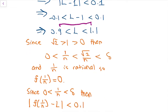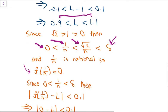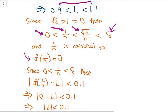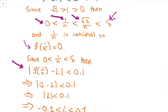Instead of considering √2/n, we now consider the number 1/n. Since 1/n < √2/n and √2/n < delta, we have 0 < 1/n < delta. Since 1/n is a rational number between 0 and delta, using the piecewise definition of the function, f(1/n) = 0. Using the fact that 1/n is between 0 and delta, it follows that |f(1/n) − L| < 0.1. Substituting 0 gives us |L| < 0.1, so L is close to 0.